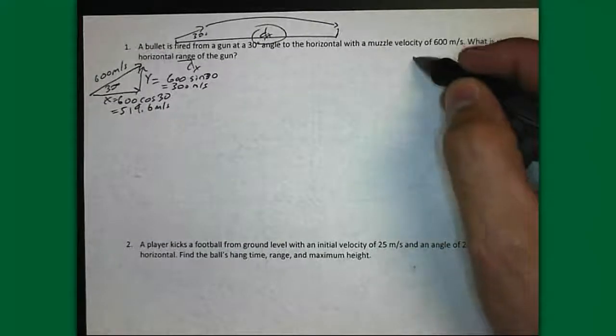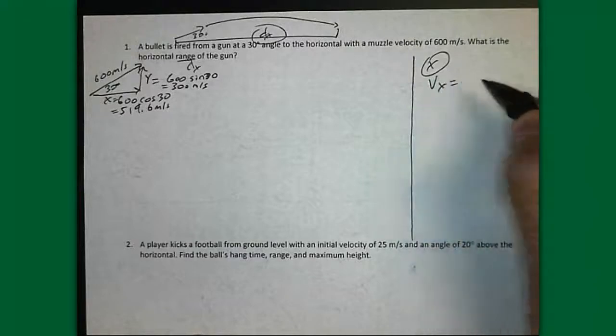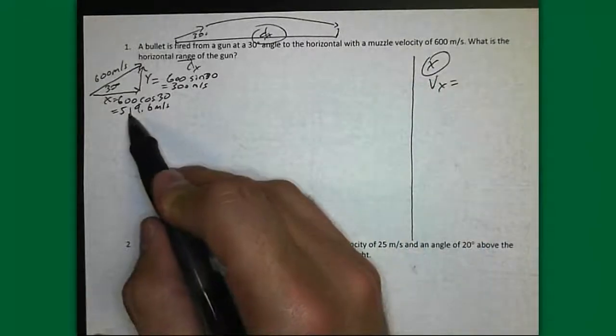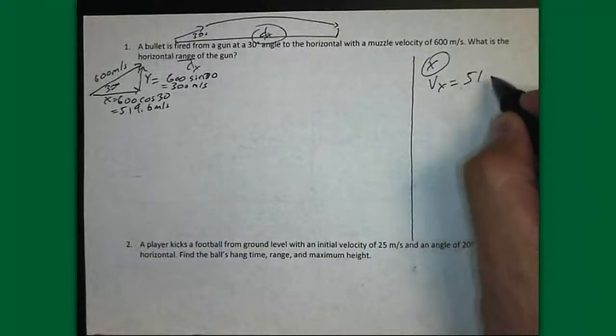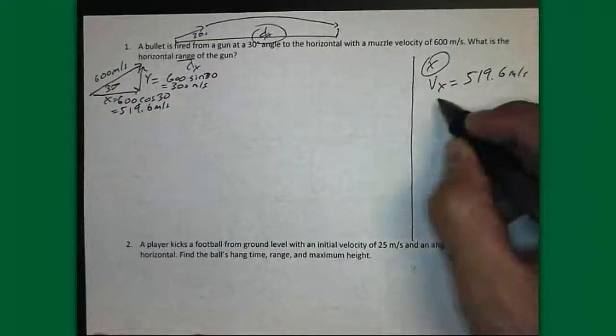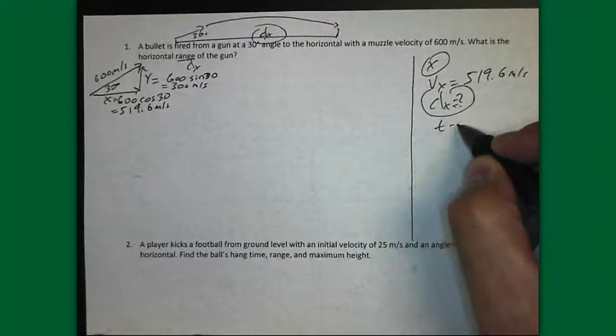Alright, so here we go. We'll separate X and Y. My VX, I know, is going to be the X component that I came up with. That's the velocity in the X direction, and it's 519.6. DX, I do not know, and that's what I want to find. I also don't know time.